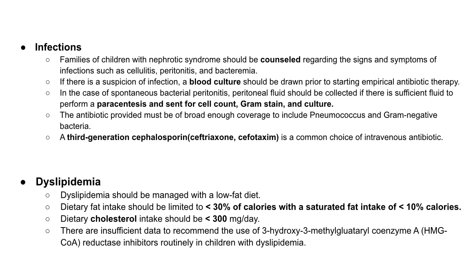Families of children with nephrotic syndrome should be counselled regarding signs and symptoms of infection such as cellulitis, peritonitis, and bacteremia. If infection is suspected, a blood culture should be drawn prior to starting empirical antibiotic therapy. In case of spontaneous bacterial peritonitis, peritoneal fluid should be collected for cell count, gram stain, and culture. A third-generation cephalosporin such as ceftriaxone or cefotaxime is the common antibiotic of choice.